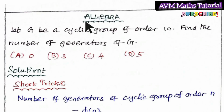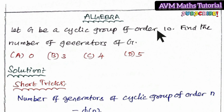Welcome friends. In this video, we will talk about algebra. Let G be a cyclic group of order 10. Find the number of generators of G.